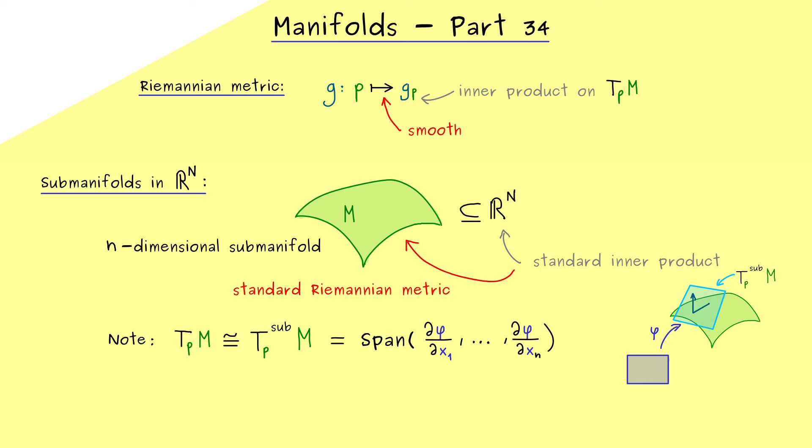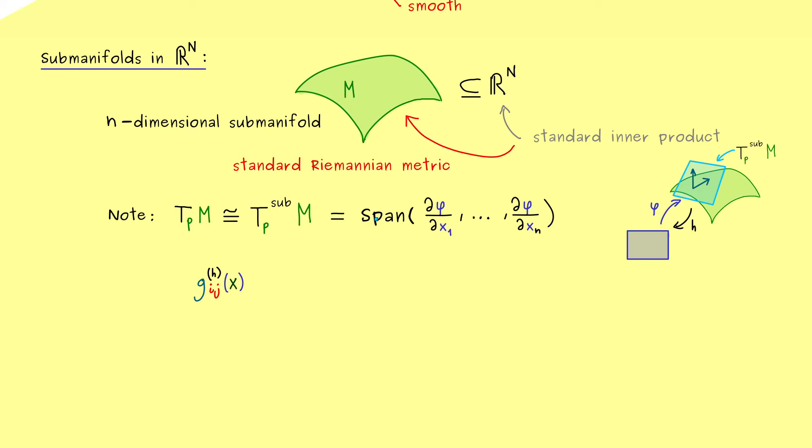And with that we can immediately write down the matrix G that describes our Riemannian metric. Namely, G_ij is given by the inner product where we put in two tangent vectors. The first one should be the partial derivative with respect to x_i, and the second the partial derivative with respect to x_j. And now to be more precise, we would say, here on the left hand side we have the point P on the manifold, and on the right hand side here we have the point P tilde on the lower level. You know, this is the common thing to do. We distinguish the variables we use.